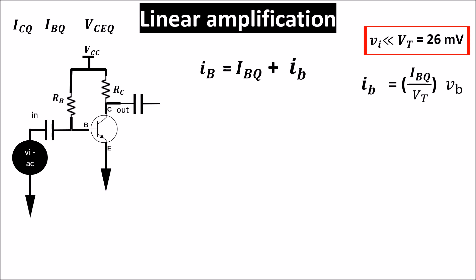Similarly we can derive this equation for the total collector and emitter currents. Applying Kirchhoff voltage law both to the base side and the collector side when the input signal is zero, we get these two equations.